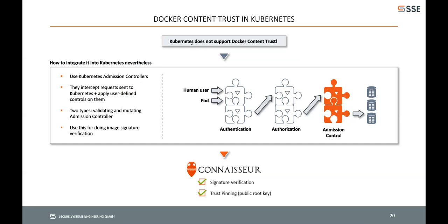The problem is that Kubernetes — our production environment — doesn't actually support Docker Content Trust. So the second objective of verifying images when pulling them into a Kubernetes cluster can't be done natively. Luckily, there are Kubernetes admission controllers: small services you can integrate into Kubernetes that intercept requests sent to the cluster and apply user-defined controls. They come in two kinds: validating admission controllers and mutating admission controllers.